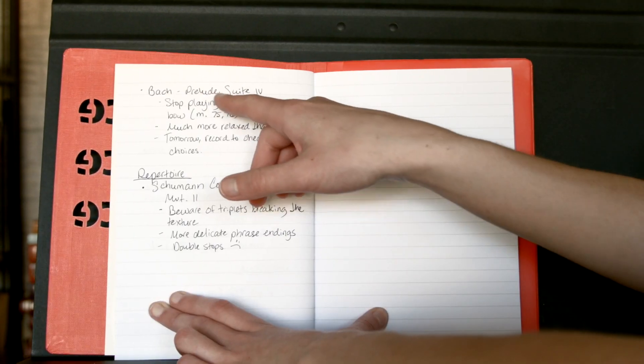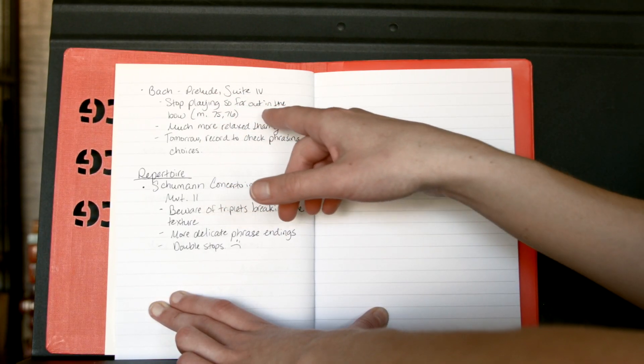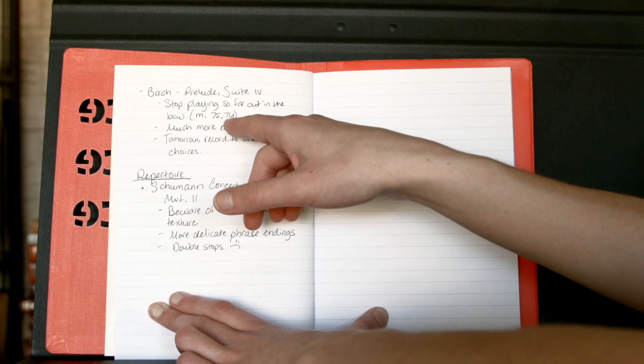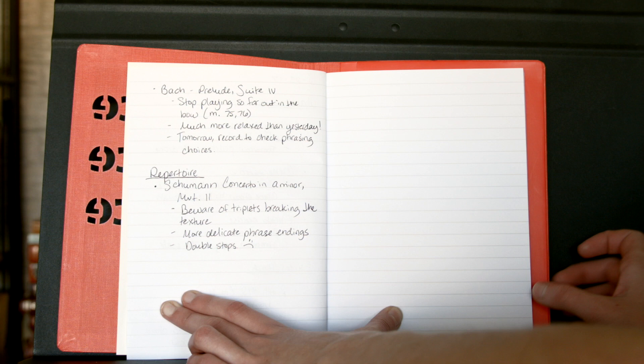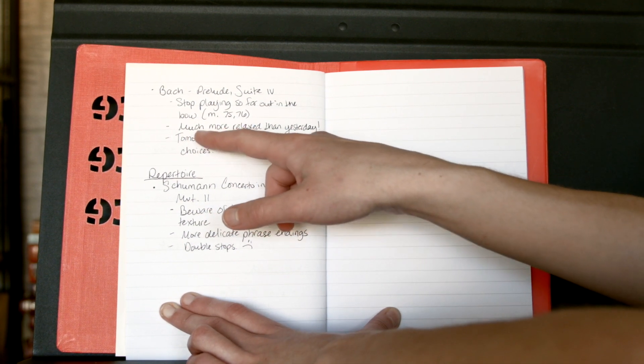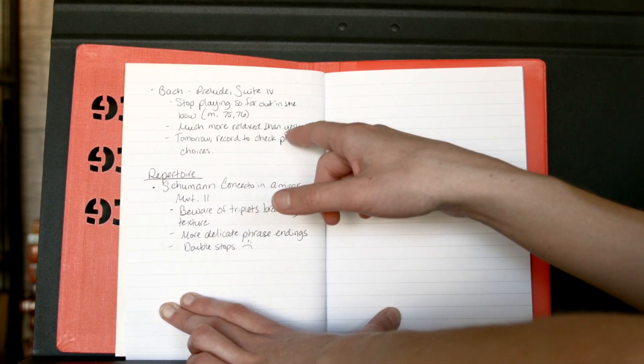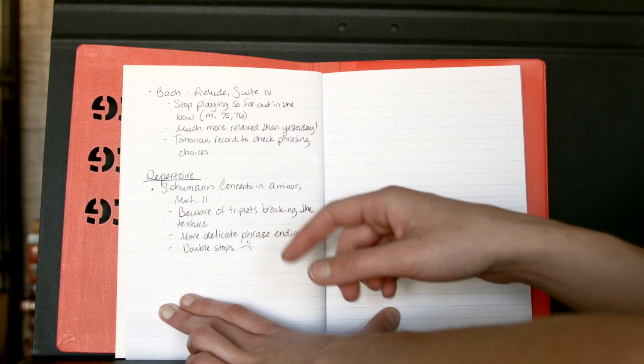Bach Prelude Suite 4: stop playing so far out in the bow, measure 75 and measure 76. So don't be afraid to call out certain measures, get really detailed, and encourage yourself. Like, today it was much more relaxed than it was yesterday, so I'll write that down—there's progress right there. Tomorrow I want to record it to check phrasing choices.